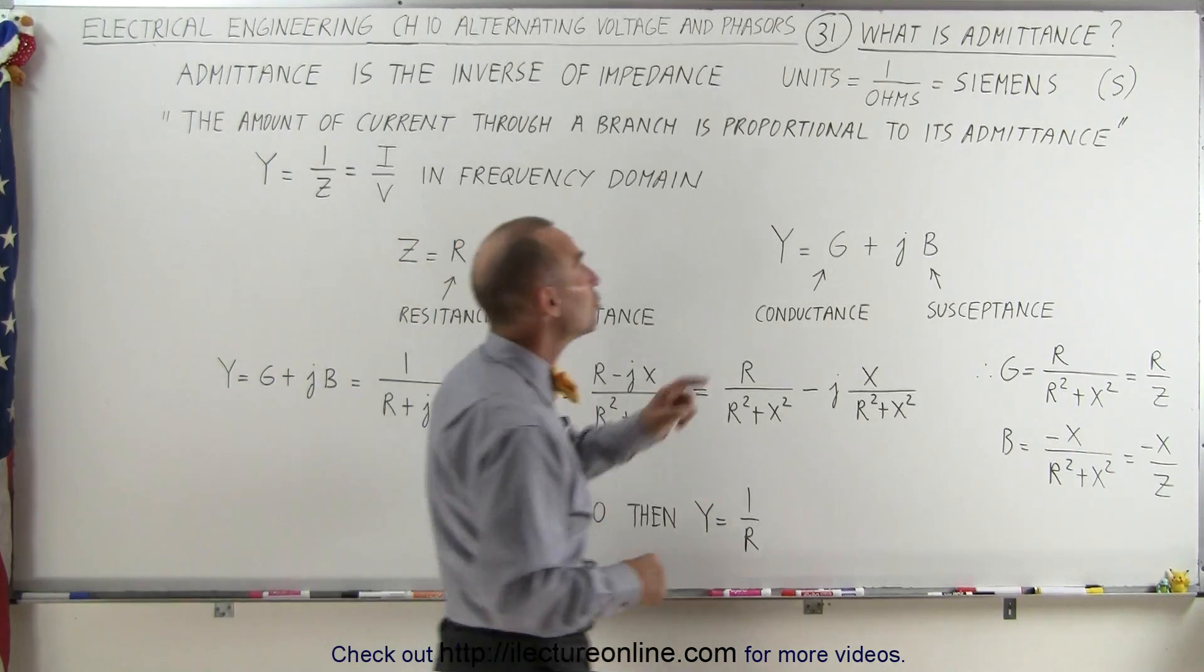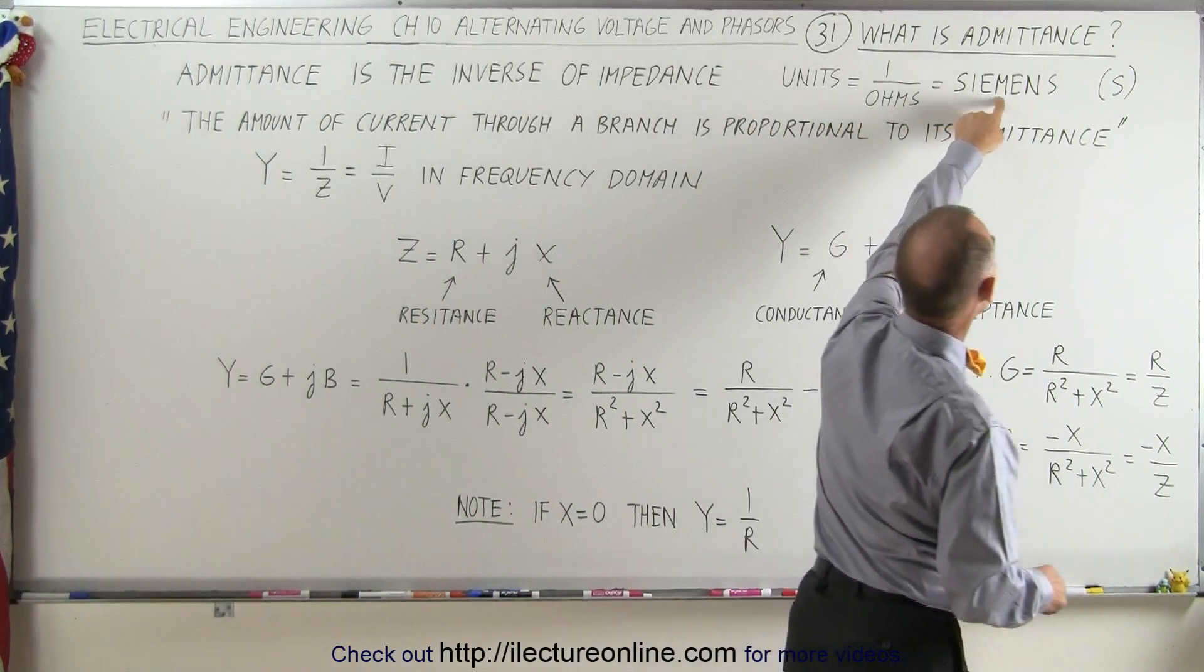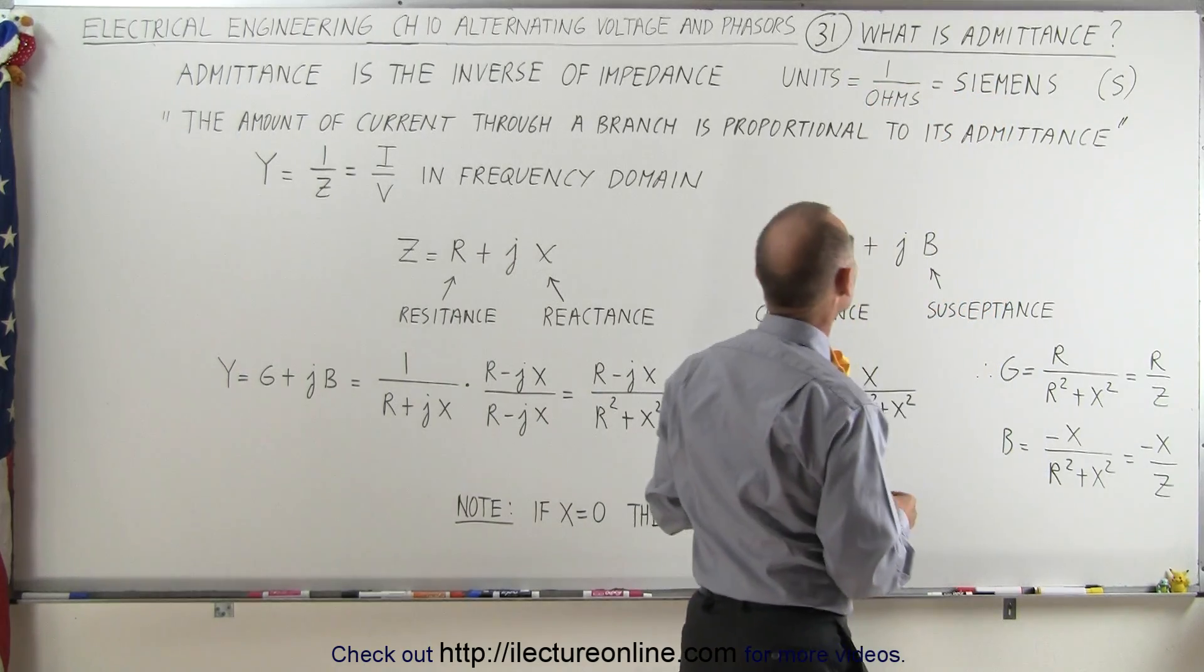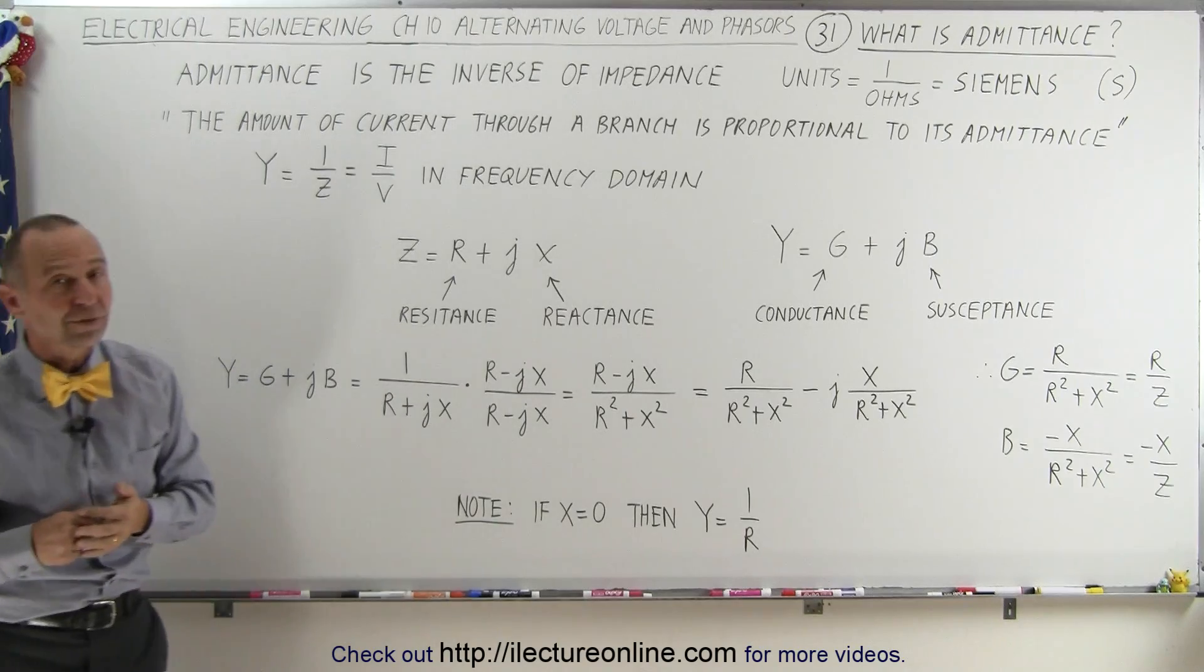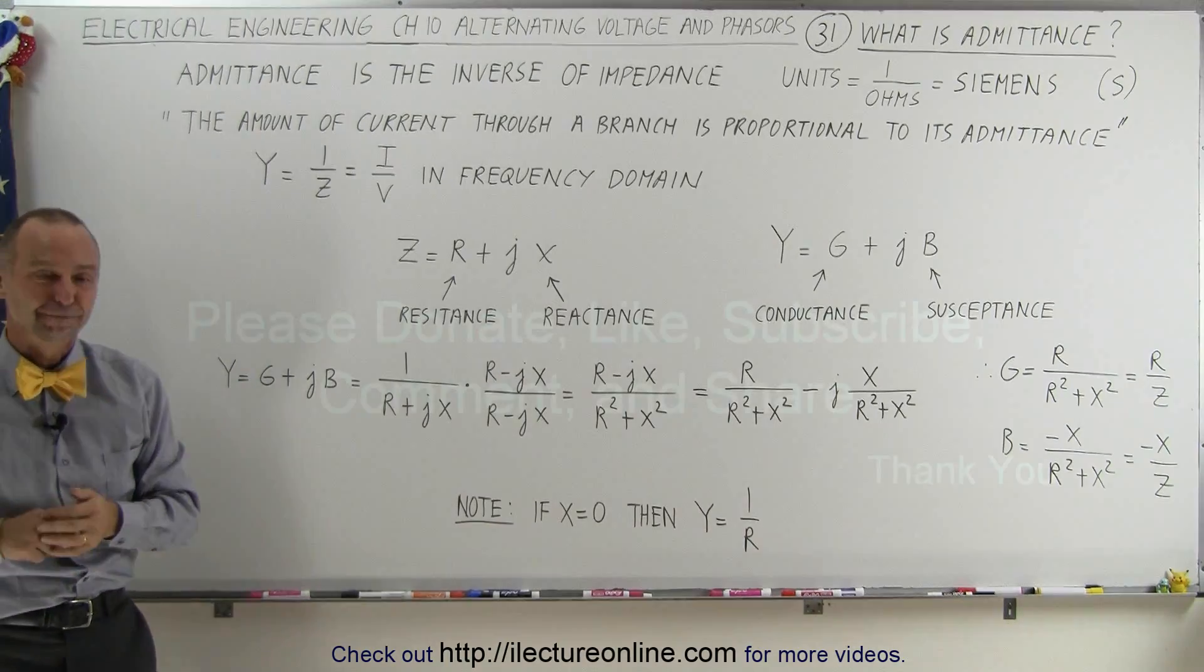Also keep in mind that the units of admittance is siemens, which is one over the impedance of ohms. And that's how it's done.